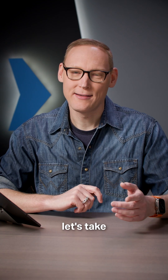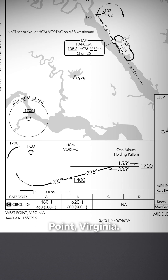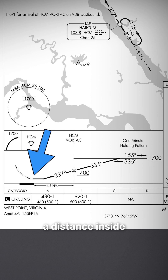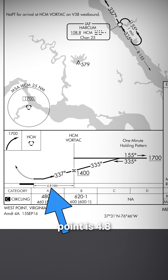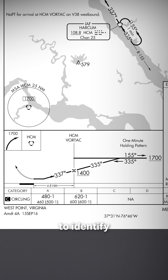For the opposite case, let's take a look at a VOR approach. This is the VOR Alpha at Middle Peninsula Regional in West Point, Virginia. When we look at the profile, you can see that our missed approach point does not have a fix associated with it, nor do we have a distance inside of that D icon. Now that missed approach point is 4.8 nautical miles away from the Harcum VORTAC, but since there's no D icon with the distance in there, we can't actually use real DME to identify that point.